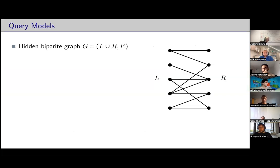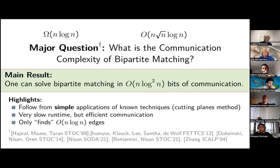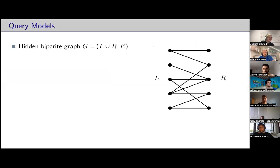Our algorithm has a very slow runtime — Alice and Bob need to spend a lot of time computing which messages to send — but they don't need to send very many bits. The algorithm finds n log n edges, and the matching itself is n edges in a perfect matching, so only a multiplicative factor of log n extra. Our algorithm is deterministic and actually outputs the edges of the maximum matching — both Alice and Bob will know the edges of the maximum matching at the end.